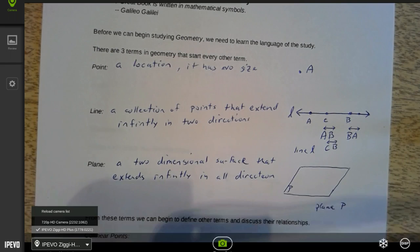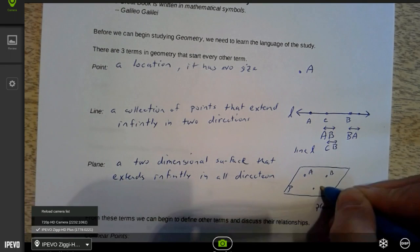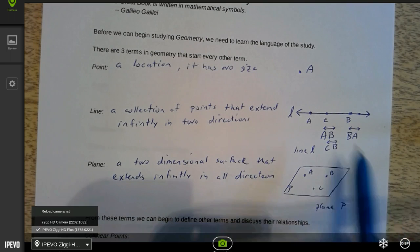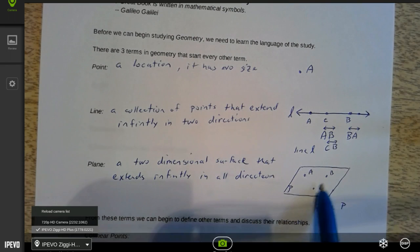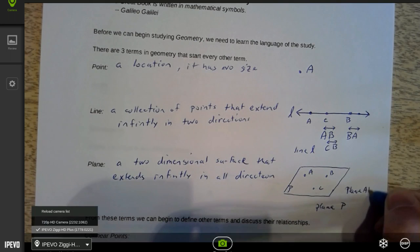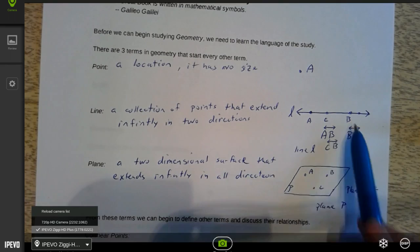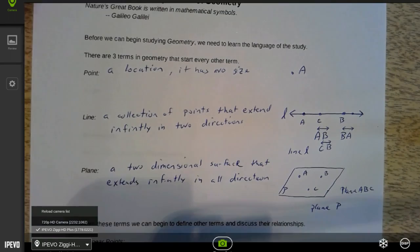Sometimes they name a plane using three points on a plane. It only takes three points to make a plane. So any three points that are not in a line together are going to create a plane, just like it only takes two points to create a line. So that's why we can name a line using only two points. Any two points make a line. Any three non-linear points make a plane. So we could call this plane A, B, C. Now notice I used another term there: collinear or non-collinear. So those are other terms that we're going to want to take a look at.